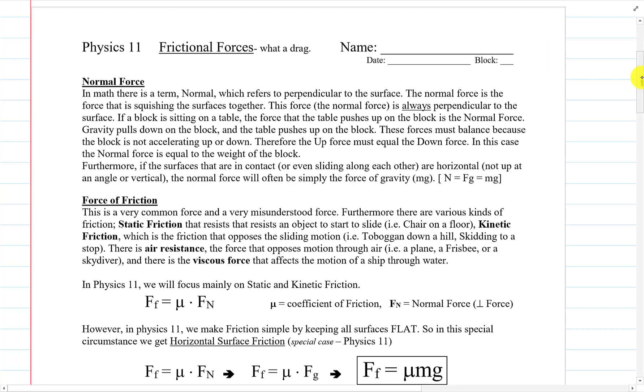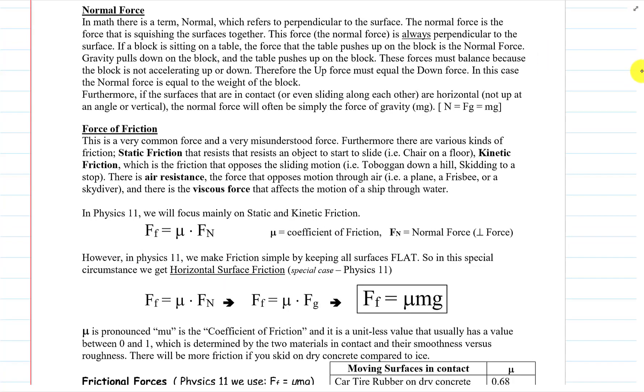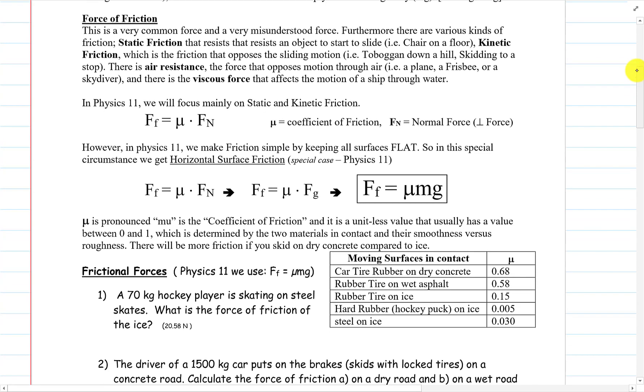The frictional force formula is one we'll emphasize quite a bit. Force of friction equals a constant called mu, the coefficient of friction. It's a Greek letter mu times the normal force. The normal force is how hard the two surfaces are being pushed together, and it's a perpendicular force to the surface.